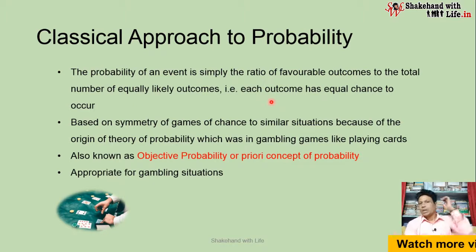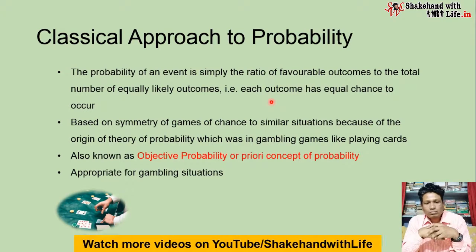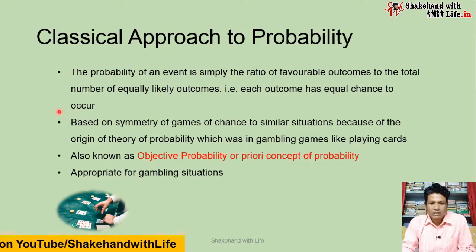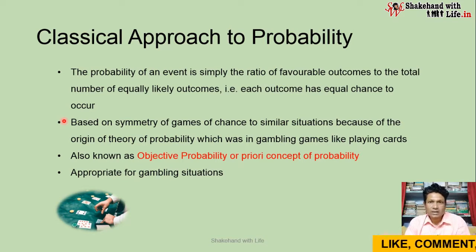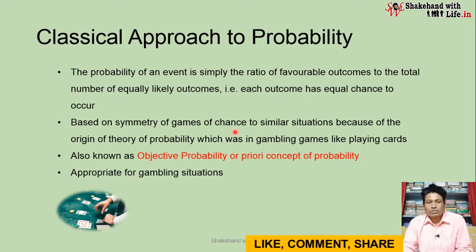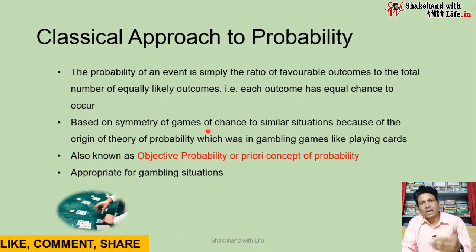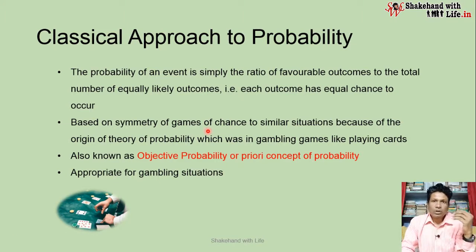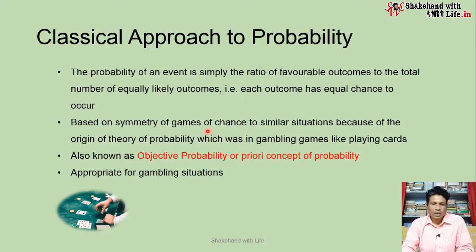If we have six numbers on a die and if we roll that die, then we have equal chance to surface each number. The classical approach to probability is based on symmetry of games of chance, similar situations like playing cards and rolling a die. The theory of probability originated in gambling games like playing cards. That is why it is also known as objective probability or priori concept of probability.